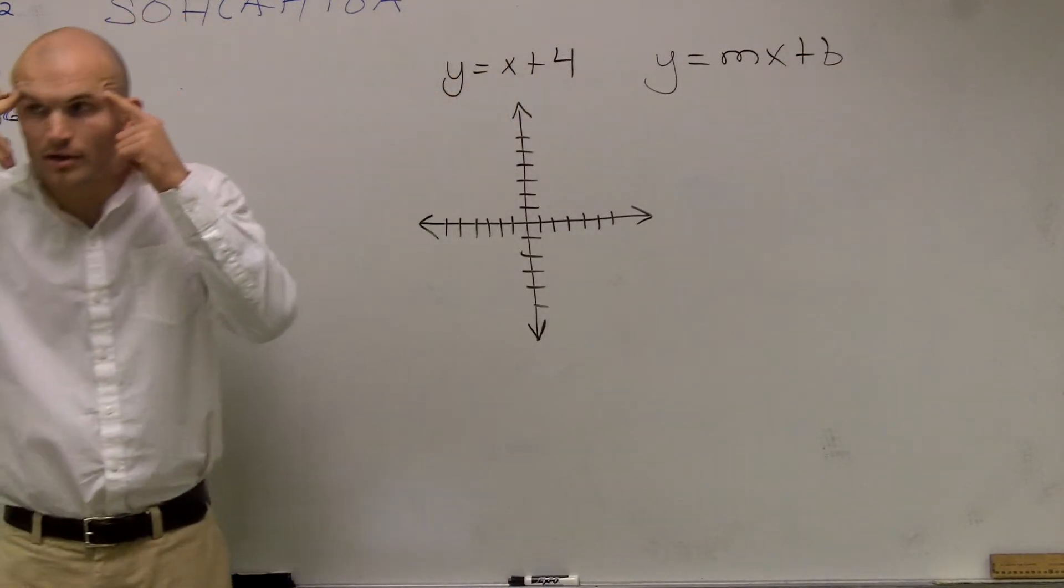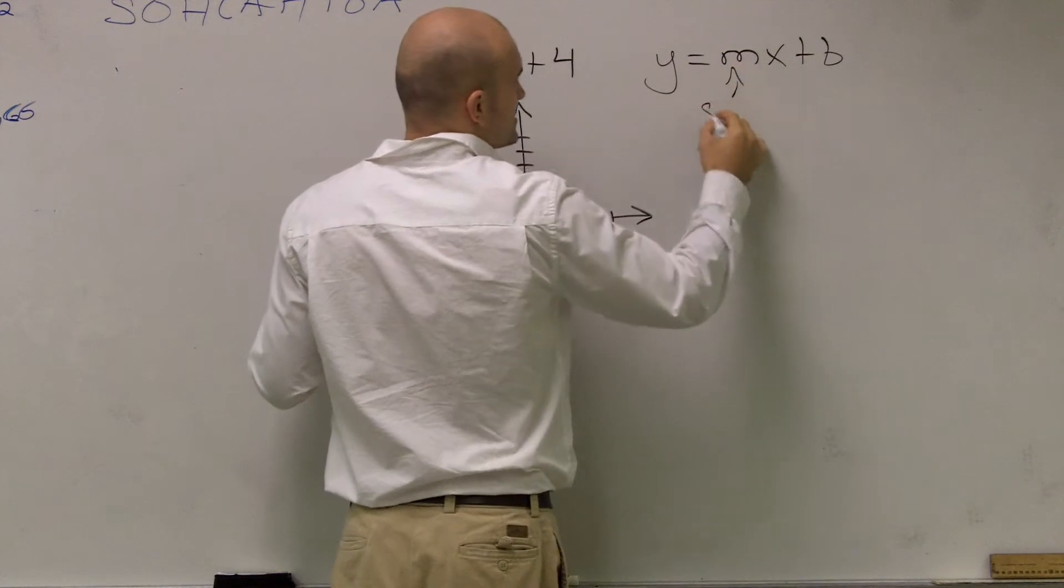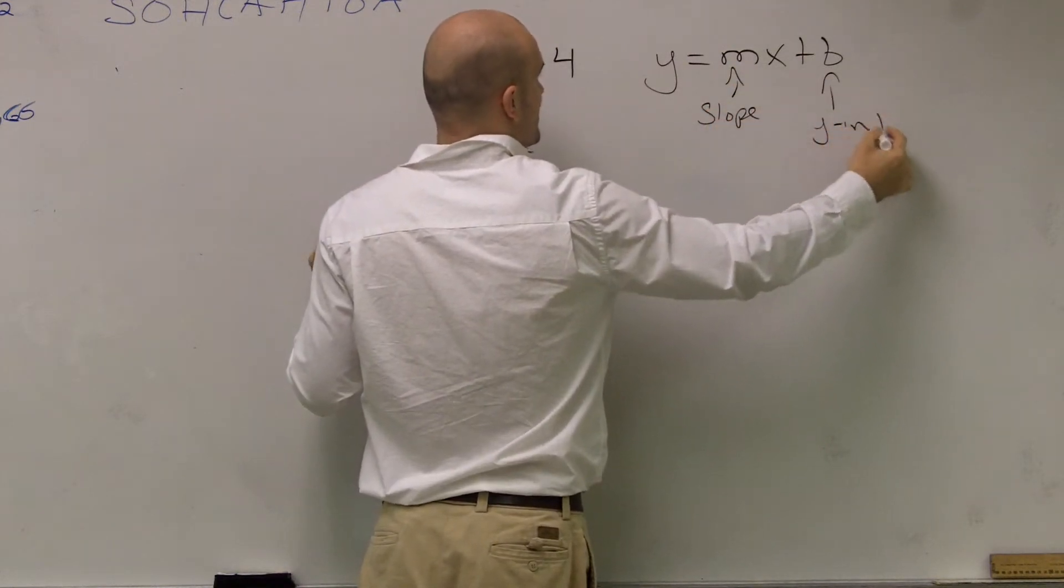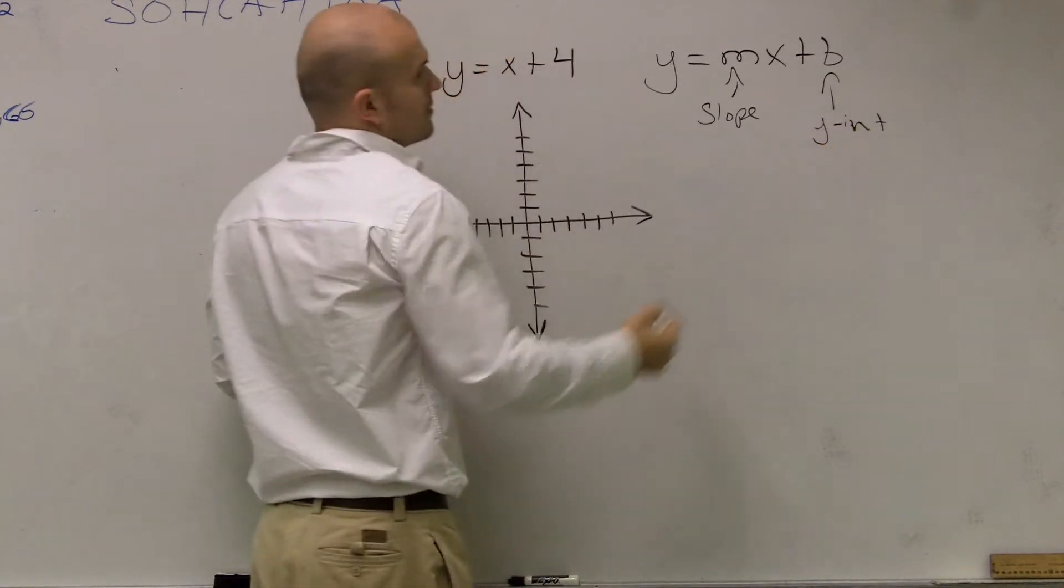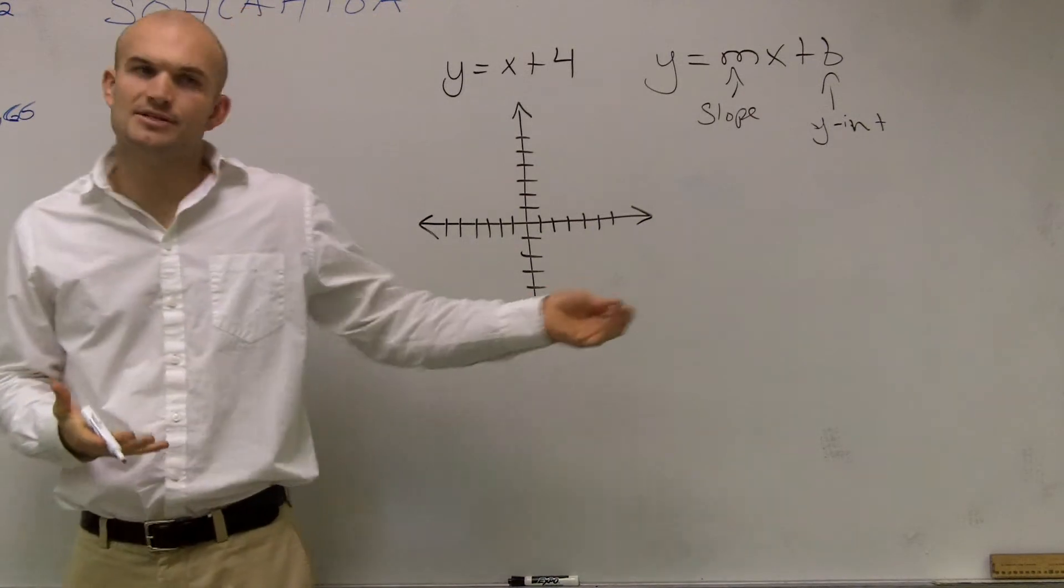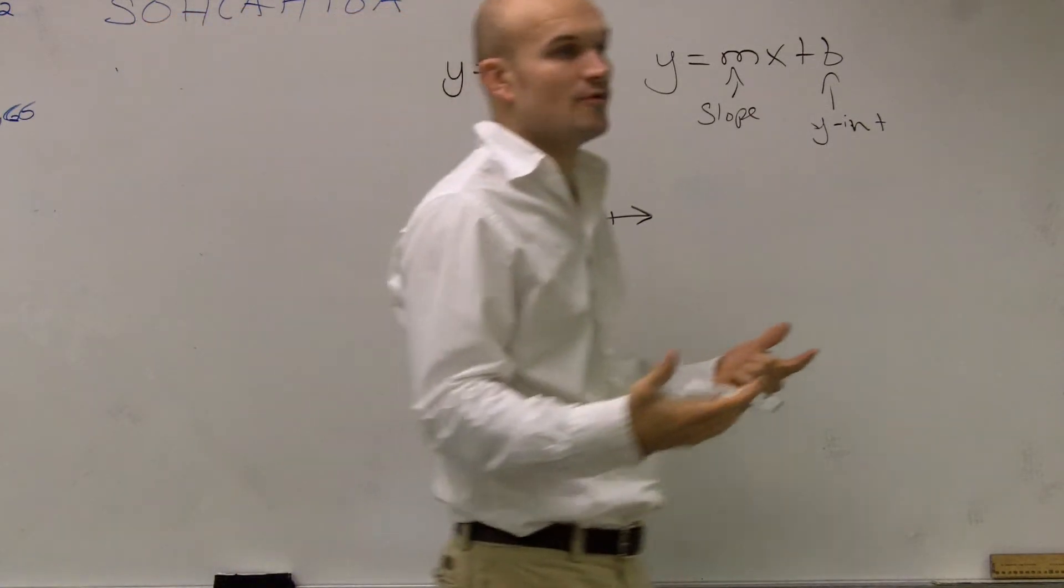Now we have to remember mx plus b, m is going to represent our slope, and b represents our y-intercept. So for this one, I think it's always easiest to find the y-intercept first. On this equation, the y-intercept is a positive 4.